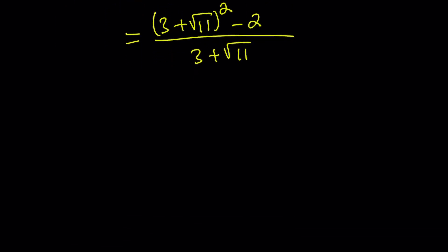If you square the sum, you get 9 plus 11 plus 6 root 11 minus 2 divided by 3 plus root 11. 9 plus 11 is 20, 20 minus 2 is 18.